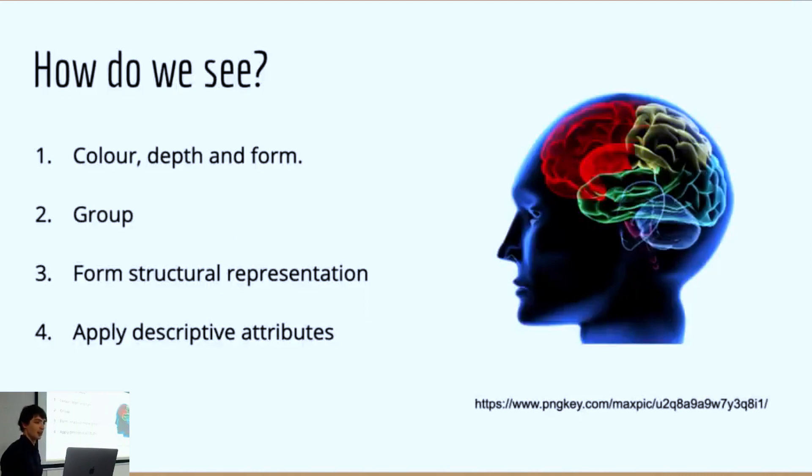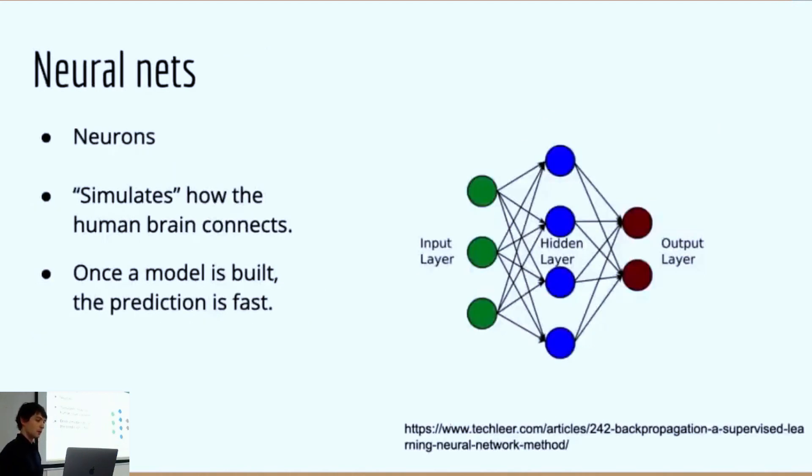So how do we see? I think it's important to cover this because neural networks and convolutional neural networks are based upon how humans see. When we look at something, we perceive the color, the depth and the form of an object. Our brain then groups all of these together and forms a structure, which we then apply descriptive labels to. If I looked at a chair, I might see different features of it - I might see the chair legs, I might see the back of it, and then eventually put that all together and I know it's a chair. We do this all the time without even thinking about it. But for a computer to do it, it's quite tricky. The researchers looked at this and they thought, we can build something to simulate how the human brain connects bits of images in this way. Neural networks aim to do this.